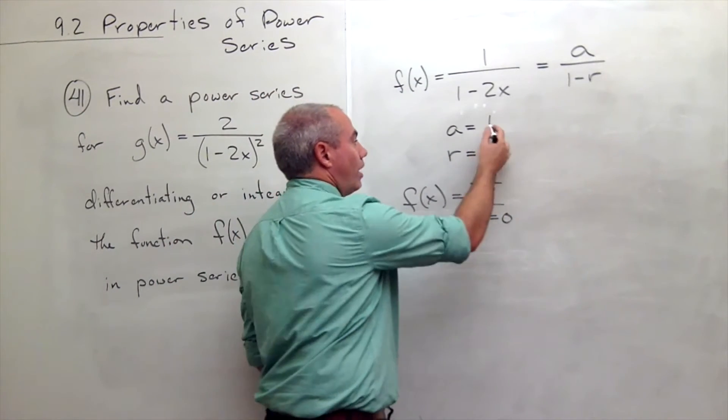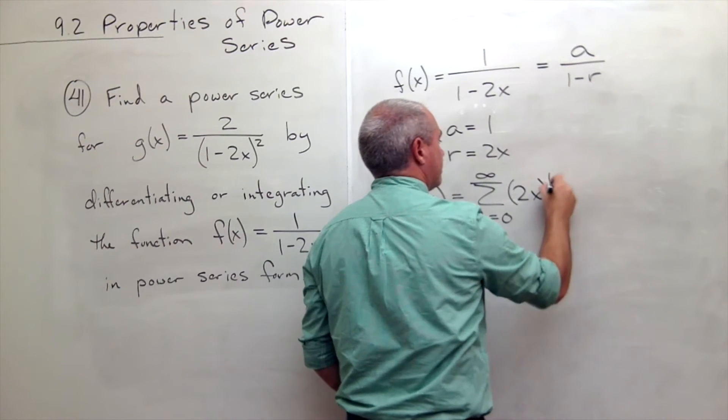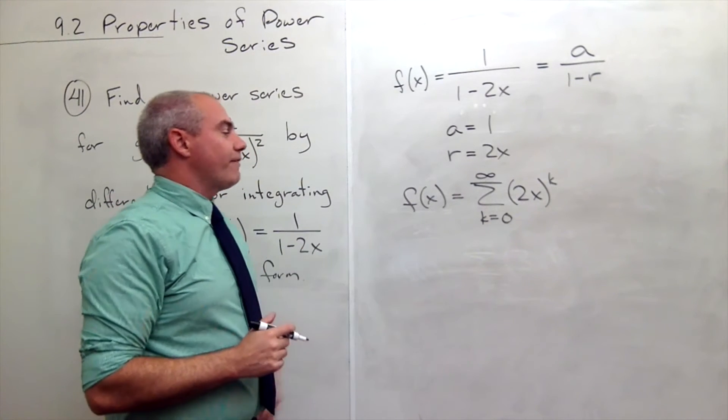Well a is 1, r is 2x, so it's 2x raised to the k. So this is my f(x).